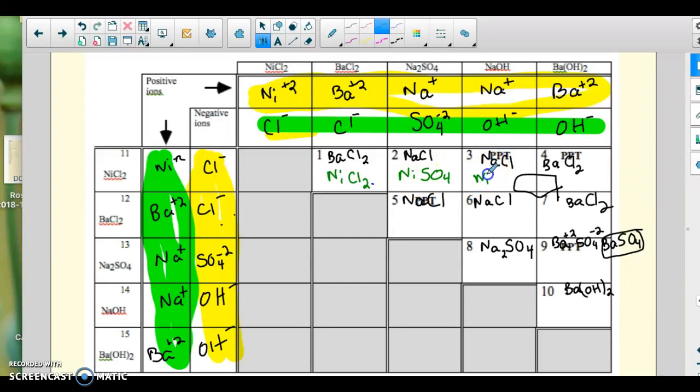Here I've got nickel with hydroxide. I need 2 of these to make the charge add up to 0. Here I have nickel and hydroxide again.